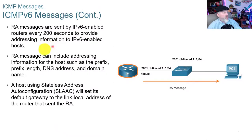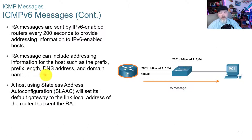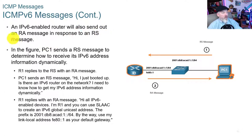RA messages are sent by IPv6-enabled routers every 200 seconds to provide addressing information to v6-enabled hosts. An RA message can include the prefix, prefix length, DNS address, and domain name. A host using stateless address auto-configuration (SLAAC) will set its default gateway to the link-local address of the router that sent the RA. A v6-enabled router will also send an RA message in response to an RS message. In the figure, PC1 sends an RS message to determine how to receive its v6 address information dynamically and gets an RA message back.